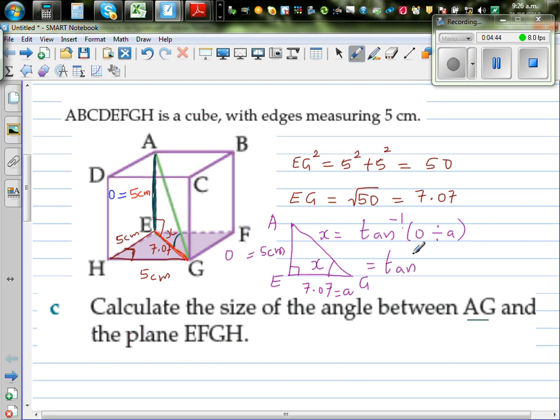What's your O, Josh? O is five divided by A, which is 7.07. So use your calculators. Rihanna, use your calculator and tell me the answer. Tan inverse of opposite divided by adjacent.